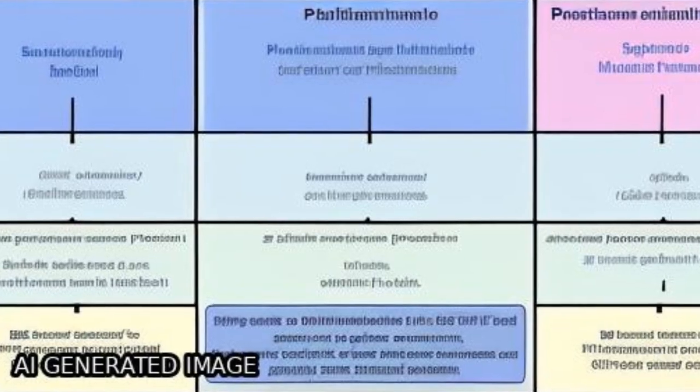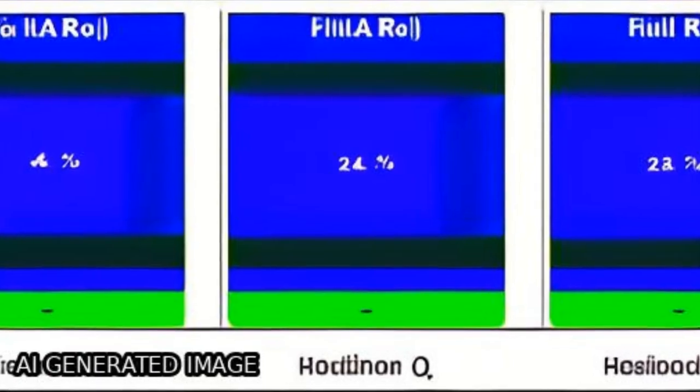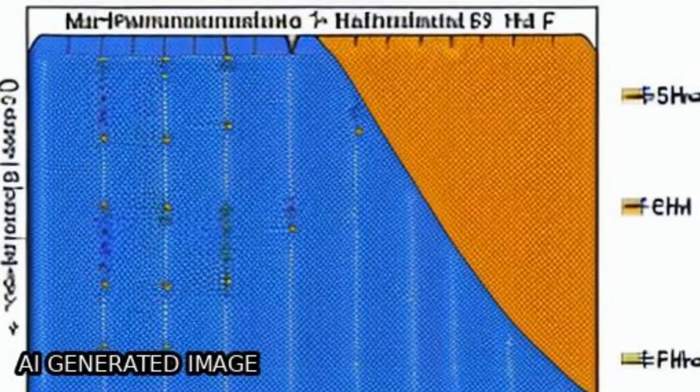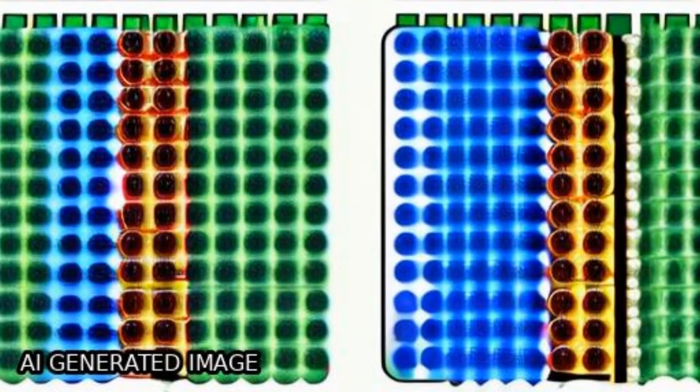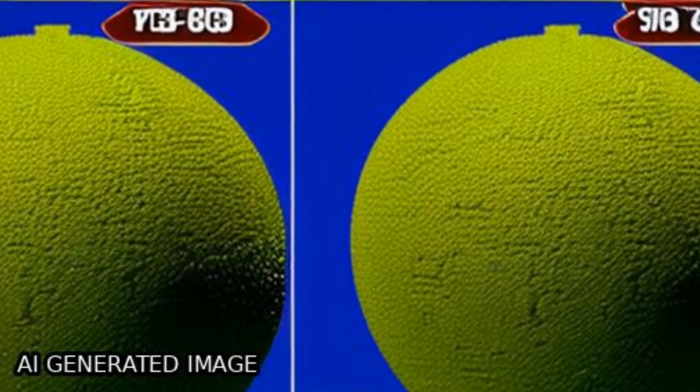The study uses the density matrix renormalization group and Chebyshev polynomial expansion technique to investigate the two-hole excitation spectrum of the one-dimensional Hubbard model in the entire filling range from completely occupied band down to half filling.